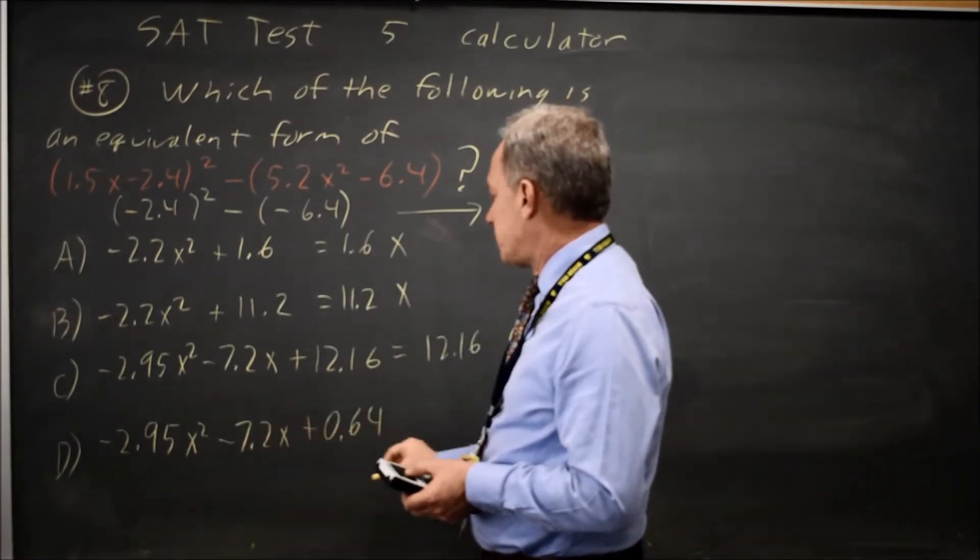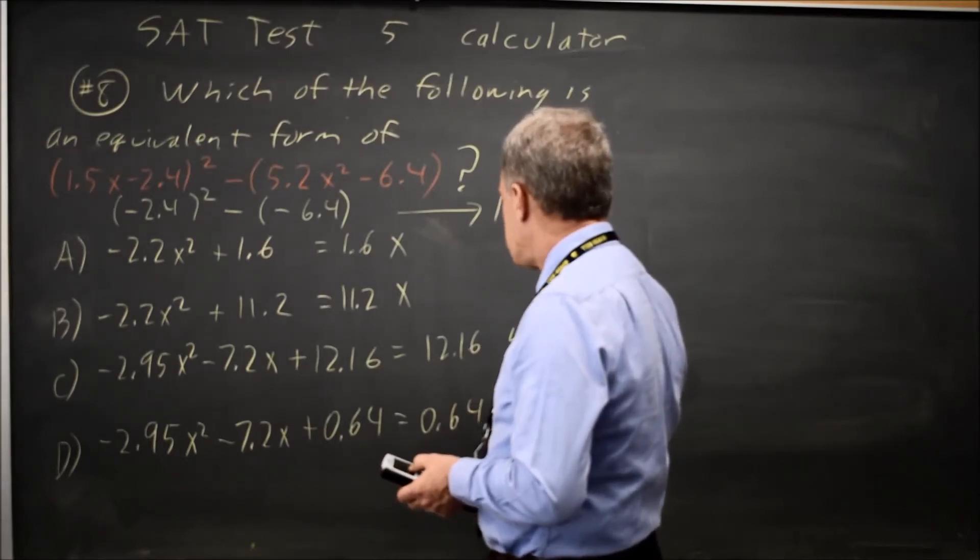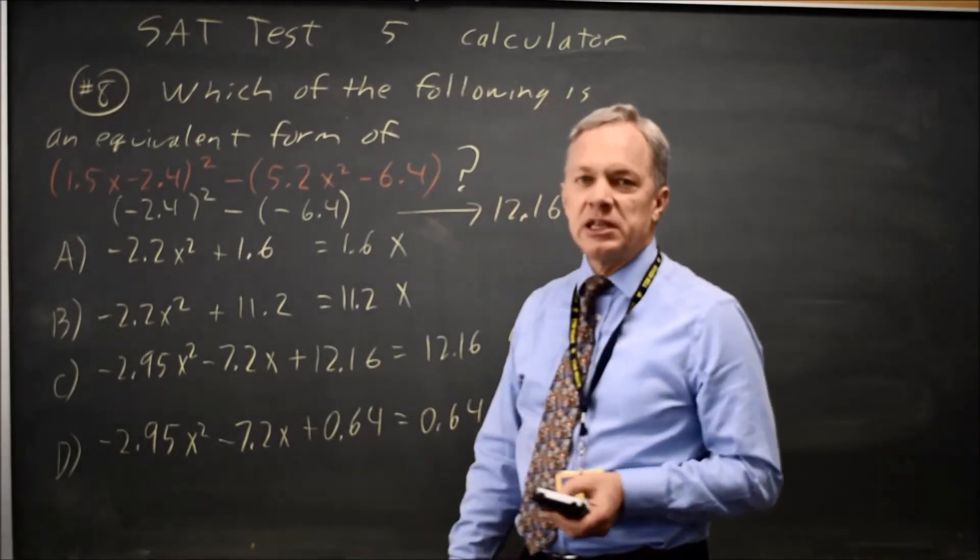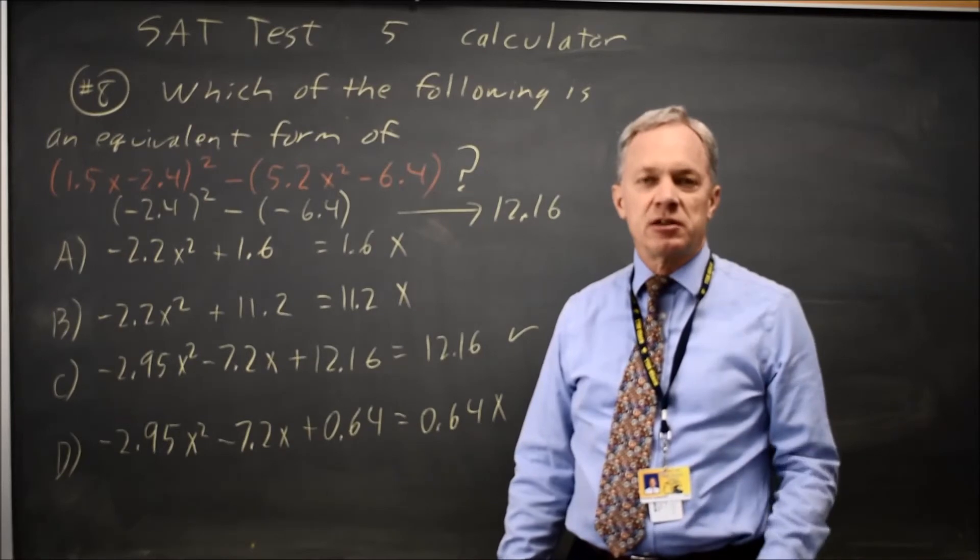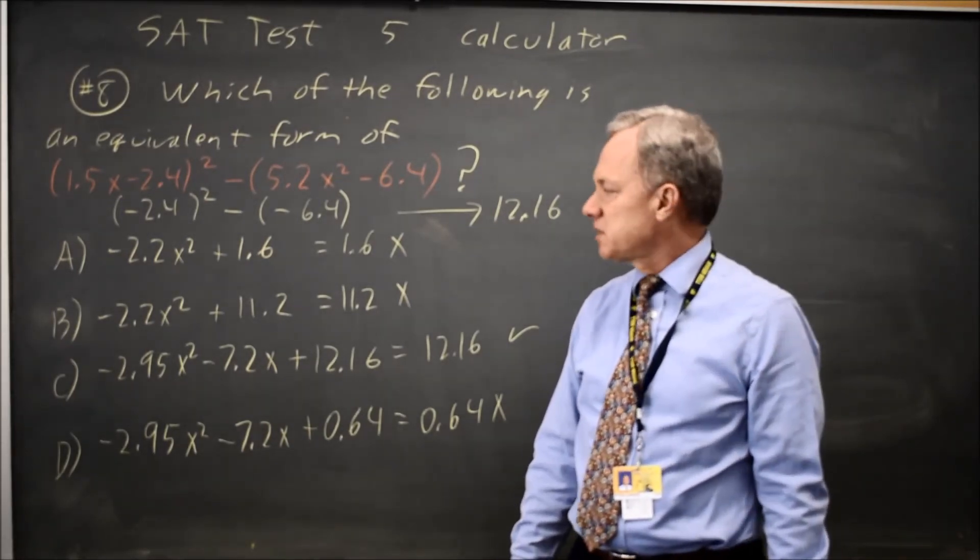And this one is 0 plus 0 plus 0 plus 0.64 equals 0.64, which is wrong. Only choice C gives me the correct answer at x equals 0. Since the correct answer has to work for all x to be equivalent, choice C is my correct answer.